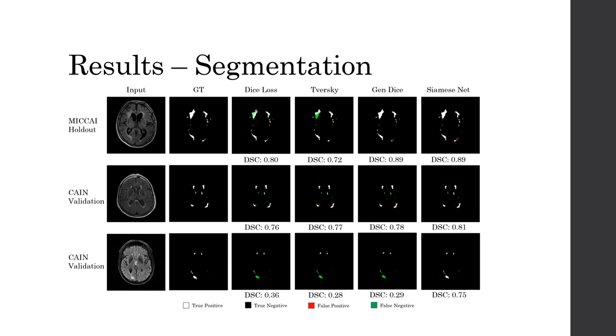However, when we cross-validate on an independent dataset of a different distribution, namely the volumes of the Canadian Atherosclerosis Imaging Network, we see our proposed method displaying greater generalizability with significantly higher dice scores, and even in some cases, significant portions that are not detected by other methods.